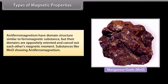Anti-ferromagnetism: These substances have domain structure similar to ferromagnetic substance but their domains are oppositely oriented and cancel out each other's magnetic moment. Substances like MnO showing anti-ferromagnetism.